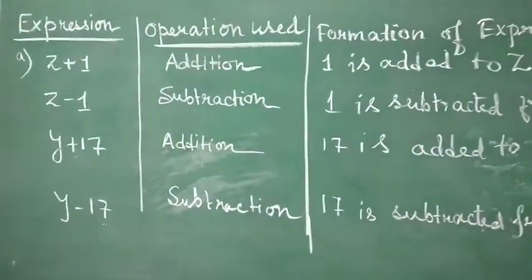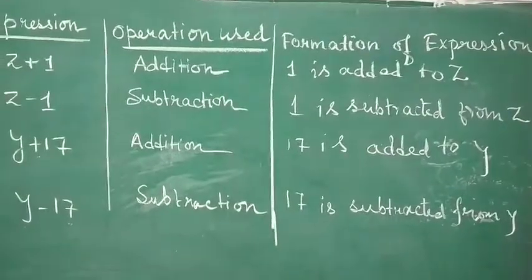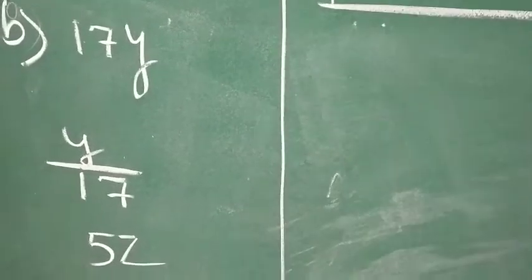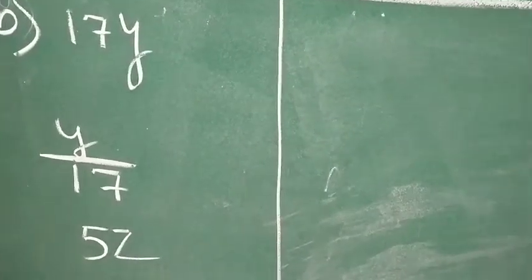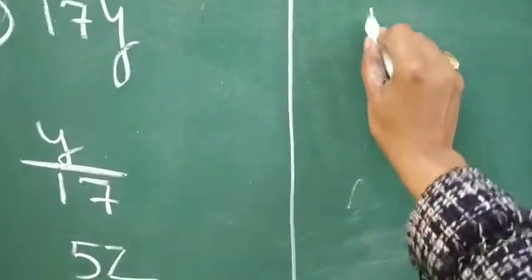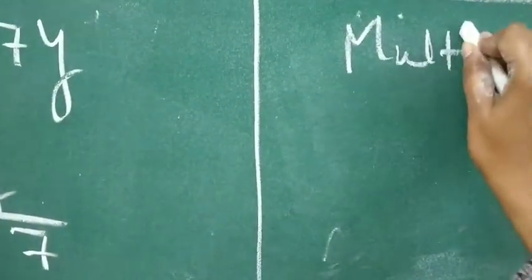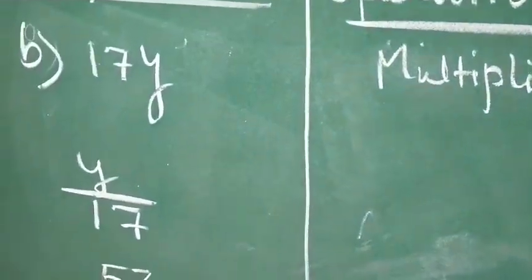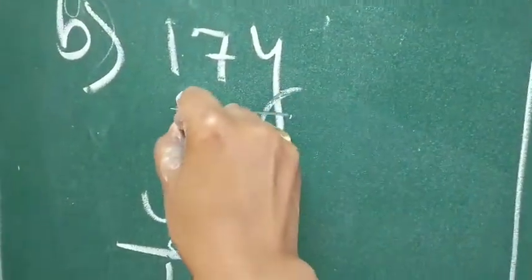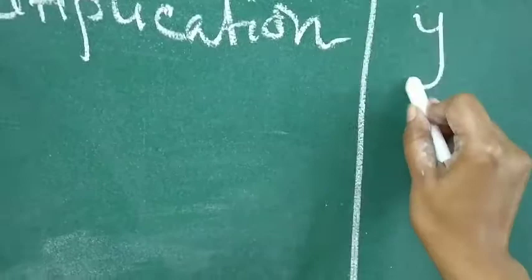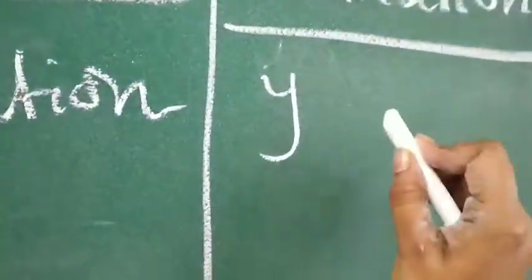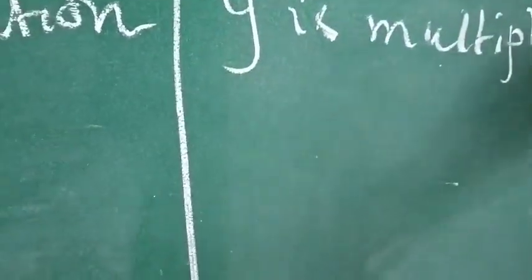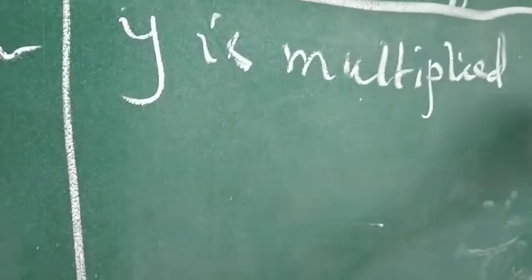So, this was our question number A. Now, next come to the B part. In the first one, we have 17y. 17y means 17 into y. So, here, we will write multiplication. And here, how it is formed? Here, y is multiplied by 17. So, we will write y is multiplied by 17.